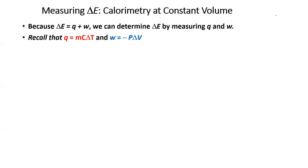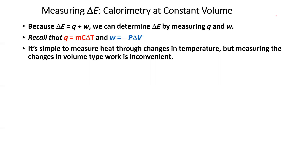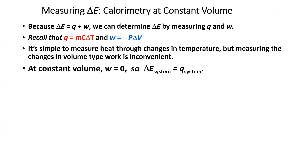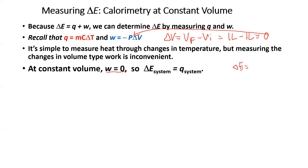Recall that Q equals mcΔT and W equals negative P delta V. It's pretty easy to measure heat through changes in temperature, but measuring changes in volume is a little bit more difficult. So if we keep the volume constant, like in a constant volume calorimeter, the work will end up being zero because delta V — V final minus V initial — is zero. For example, one liter minus one liter gives zero, and any number times zero gives zero. So now my delta E, which is Q plus zero, would just equal the heat of the system.